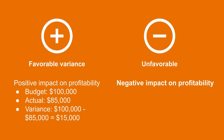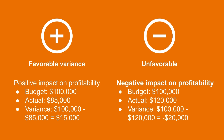Unfavorable variances indicate an adverse situation when the actual cost is more than the budgeted cost. Going back to the same example where the company budgeted to spend $100,000 on direct labor — if something didn't go to plan and they ended up spending $120,000 that month, they would end up with a $20,000 unfavorable variance since they spent $20,000 more than they planned.